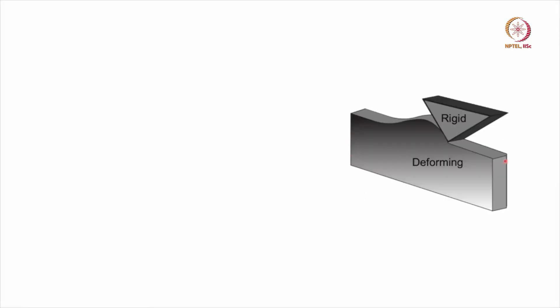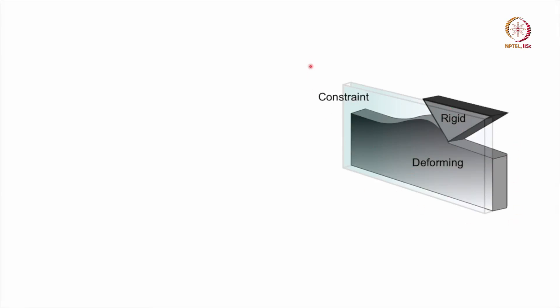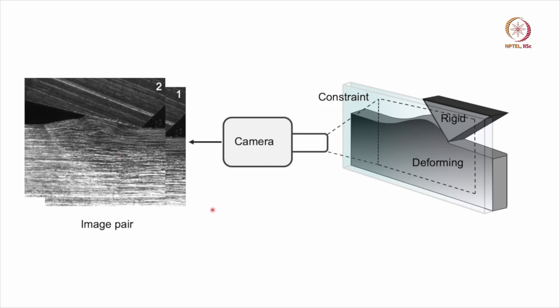Let us look at the basic components which go into a DIC experiment. We have a work piece which is deforming, and to ensure there is no out-of-plane deformation we have a glass plate pressed against the work piece. Perpendicular to this work piece we have our camera focusing on the region of interest, and we will get an image pair while imaging this region of interest. Let us look at how we set up this experiment in the lab.